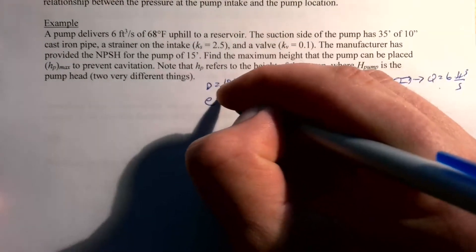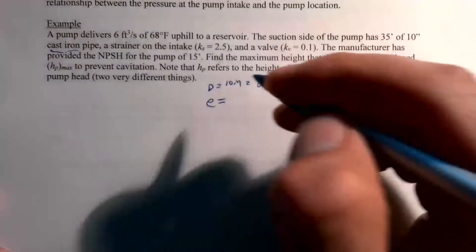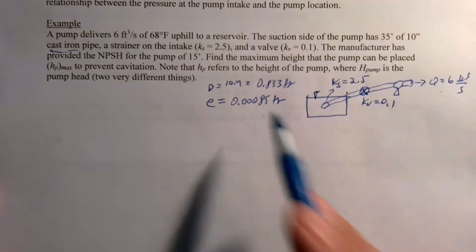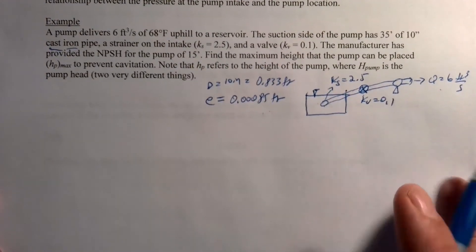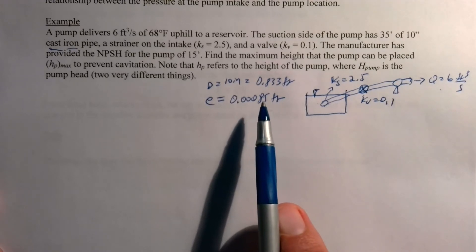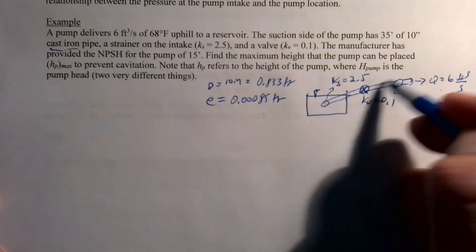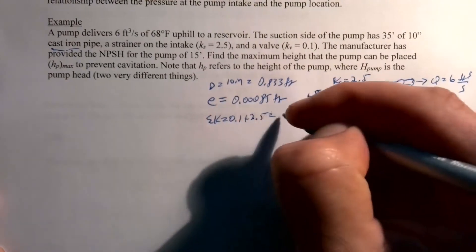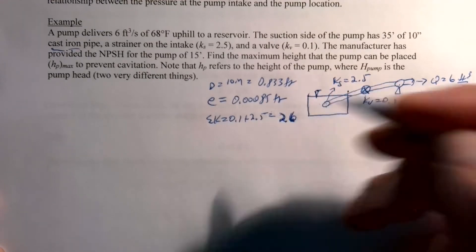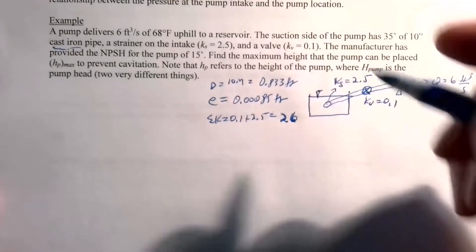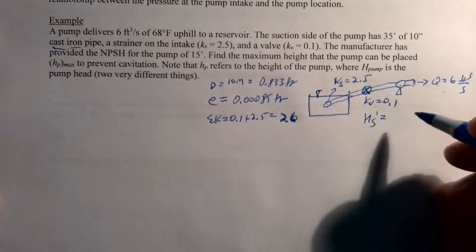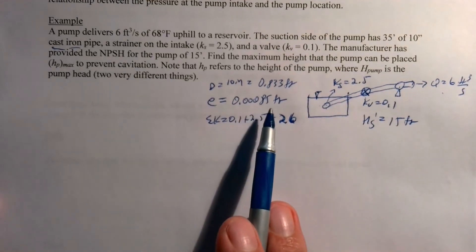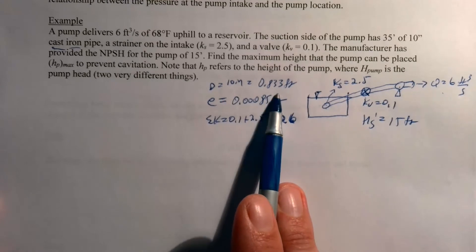The diameter is 10 inches, which equals 0.833 feet. It's cast iron, so our roughness height ε is 0.00085 feet. Working in US units. The sum of minor loss coefficients is K_v + K_s = 0.1 + 2.5 = 2.6. And the net positive suction head HS prime is given as 15 feet.